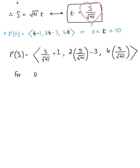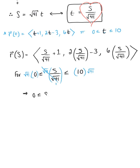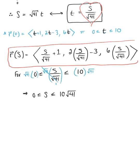We also need to adjust the bounds. Since s / √41 satisfies 0 ≤ s/√41 ≤ 10, we multiply each part of the inequality by √41. The √41 cancels in the middle, leaving us with 0 ≤ s ≤ 10√41. So the arc length parameter ranges from 0 to 10√41.